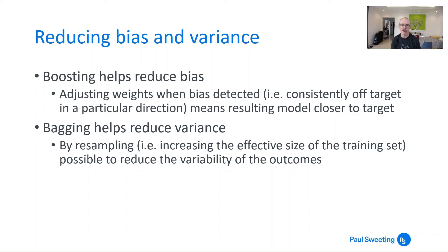And bagging helps reduce variance. So by resampling, essentially increasing the effective size of the training set, it should be possible to reduce the variability of the outcomes.